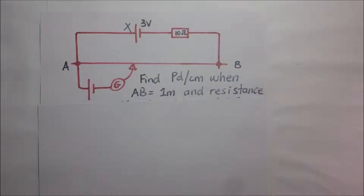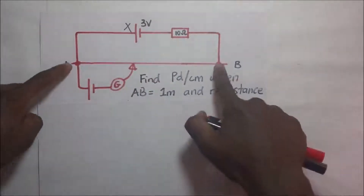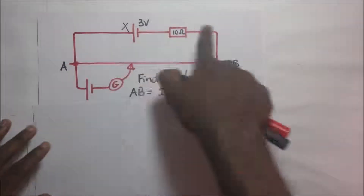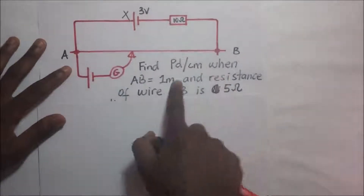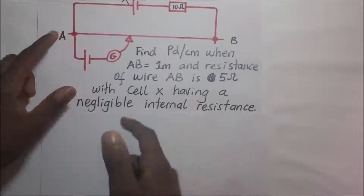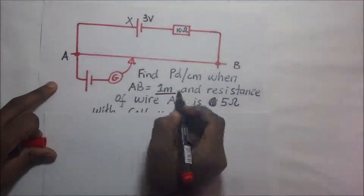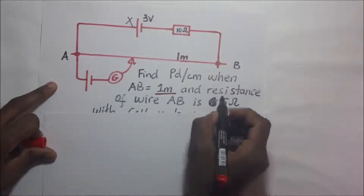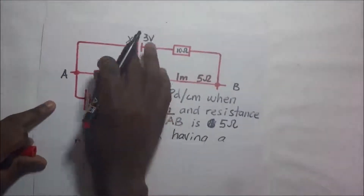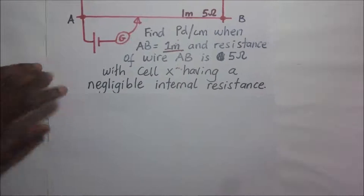Let's take this a notch higher. In our next question, we have similar parameters: cell X with 3 volts and slide wire AB still 1 meter long — but this time we have a new resistor in the primary circuit of 10 ohms. We need to find the PD per centimeter when AB is 1 meter long, the resistance of wire AB is 5 ohms, and cell X has a negligible internal resistance. We'll find the PD per unit length by first finding the current going through wire AB.